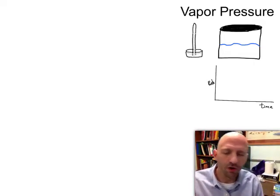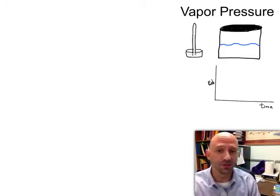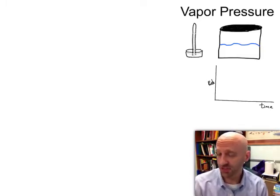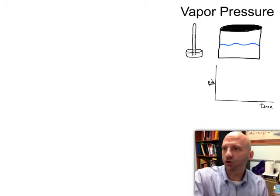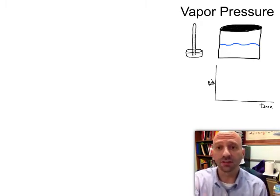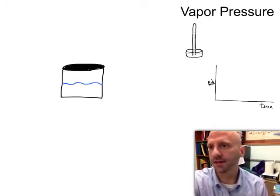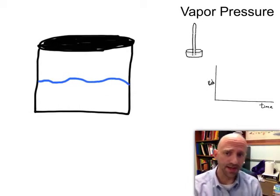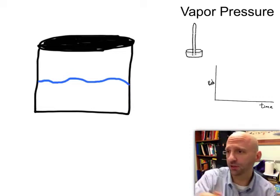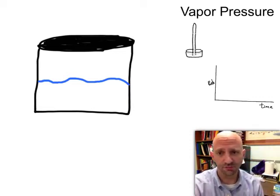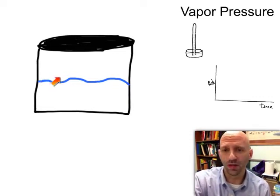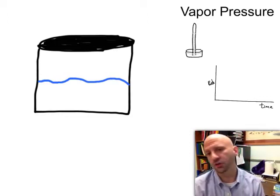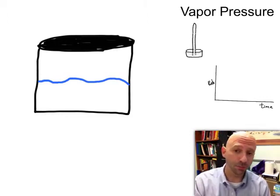So vapor pressure, although it sounds like it's going to have something to do with a gas, and I guess it does, it really is ultimately a property of a liquid. So let's take a look at what we're getting at here. So here is a closed container that has a liquid, and you know it has a liquid because the universal sign for a liquid is a wavy line here. So we're probably looking at water here because it's a blue wavy line.